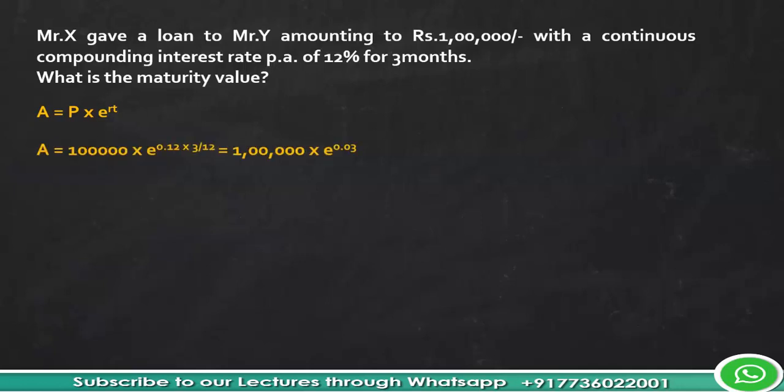So look at here. A is equal to 100,000 multiplied by e^R, that is 12% which is written as 0.12 into 3 by 12. So this basically gives e^0.03. That's what you see here: 100,000 into e^0.03. So now what do we have to do?